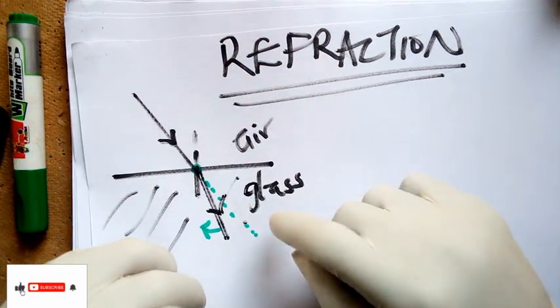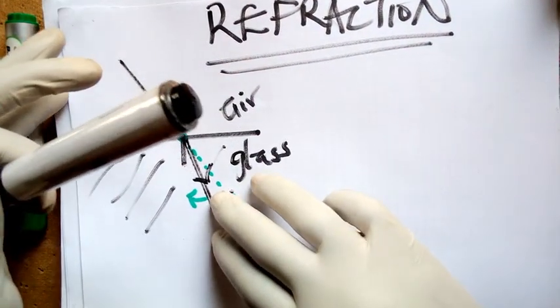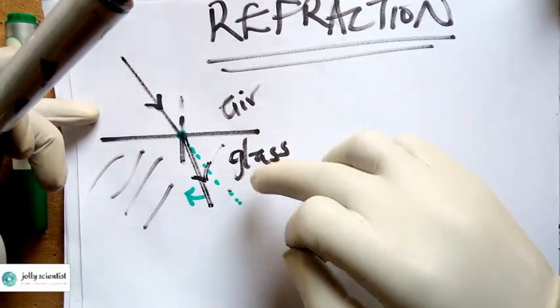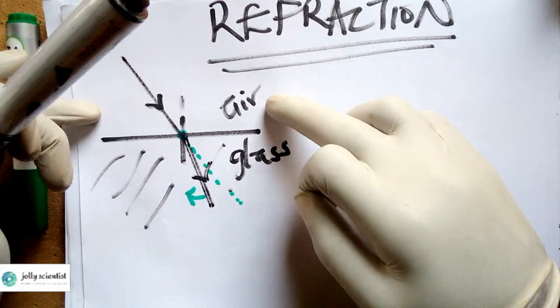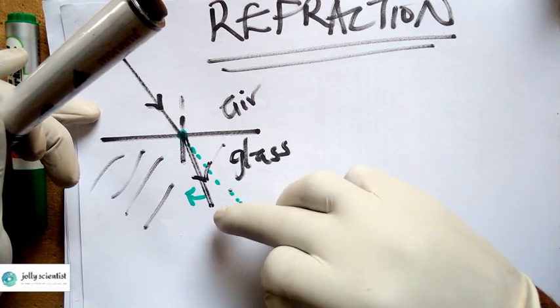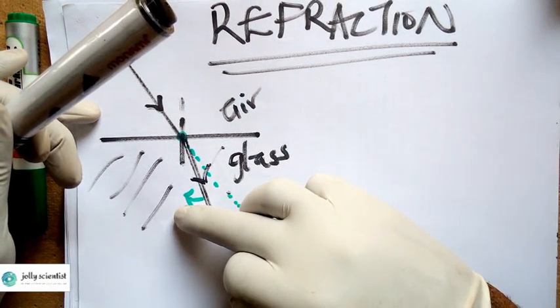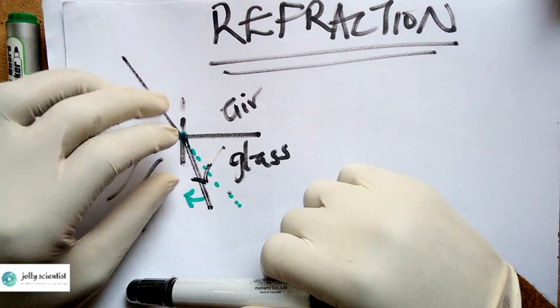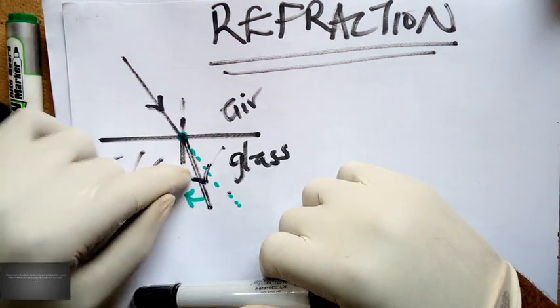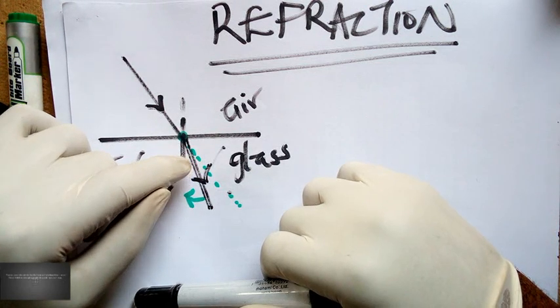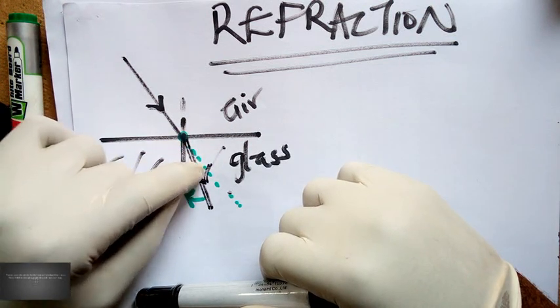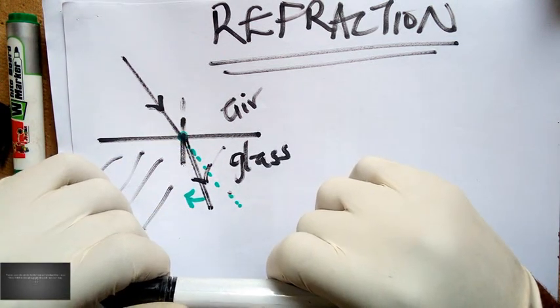This bending of light towards the normal occurs only when the second medium is more dense or denser than the first medium. So it means the more optically dense this medium is, the more it moves towards the normal. Now, there's a value assigned to the bending of light in various mediums because every medium has its own constant value assigned to the extent to which it can bend. And that's where Snell's law comes in.